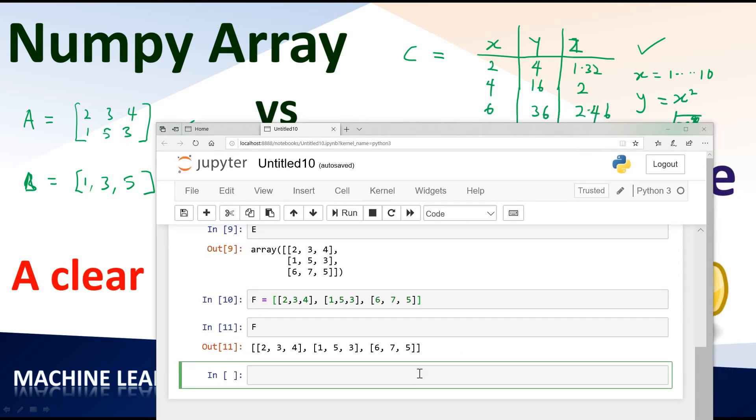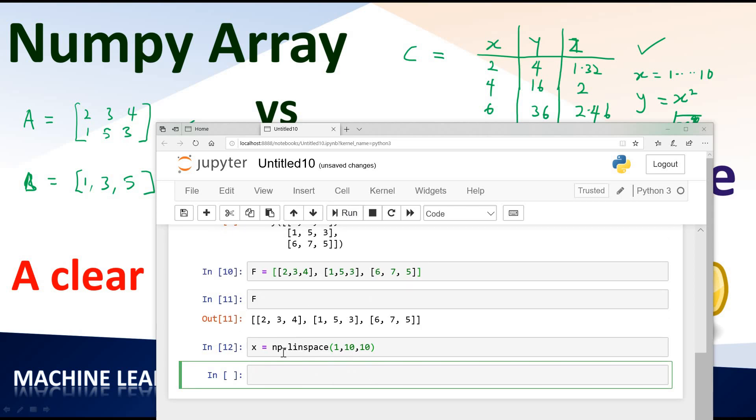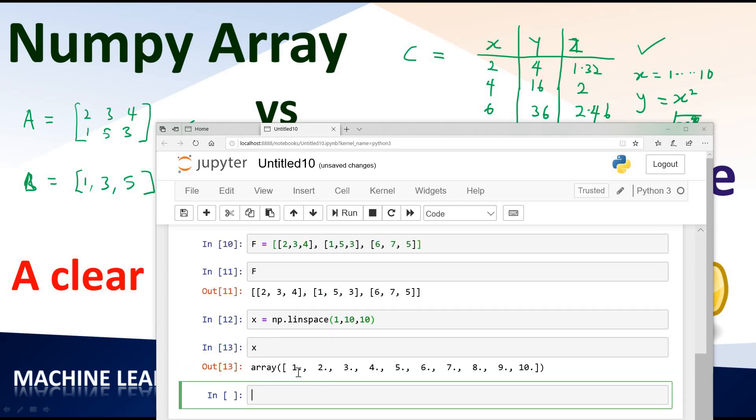What we're going to do is define the range of values first. I'm going to say x equals numpy.linspace. We're calling numpy to help us create a range of values from 1 to 10 and we need 10 values. So at this point, if I look at x by typing x and running, you can see it says 1, 2, 3, 4, 5, 6, 7, 8, 9, 10.